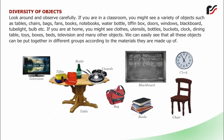If you are at home, you might see clothes, utensils, bottles, buckets, clock, dining table, toys, boxes, beds, television and many other objects. We can easily see that all these objects can be put together in different groups according to the materials they are made up of.